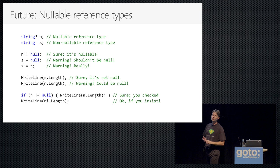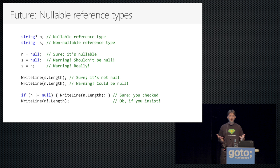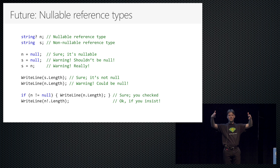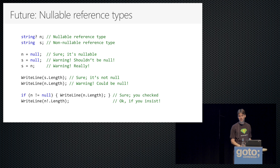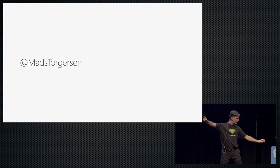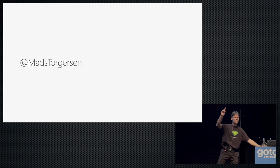We're already working on the nullable reference types feature, and we're hoping to get it into the next version of C#. The interesting thing is it needs to not only go into the language — we need to make sure our frameworks are adequately annotated so that when you build on them, the right nullabilities propagate into your own code. It's a bit of a challenging feature but I think it's worth it. Remember to fill out the evaluations. Thank you very much — it's a pleasure.